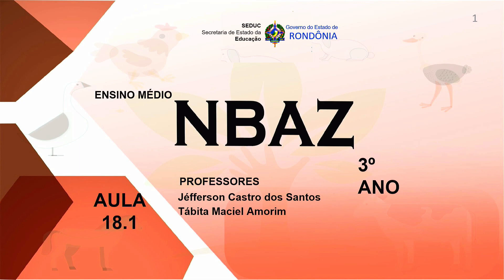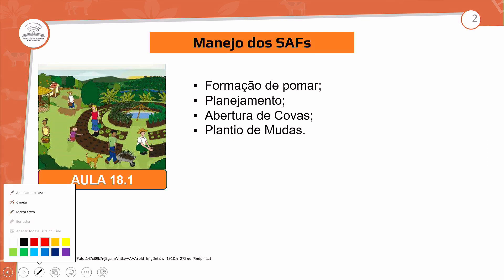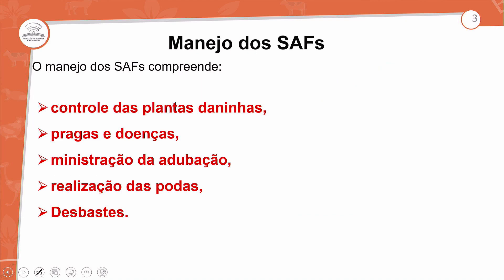Aula 18.1. O que nós vamos ver? Manejo no SAF. Esse manejo vai estar relacionado com formação de pomar. Como é realizado o manejo em um sistema SAF? Quais são os tratos culturais realizados? Para isso precisamos ter um planejamento, como é realizada a abertura de cova e o plantio.